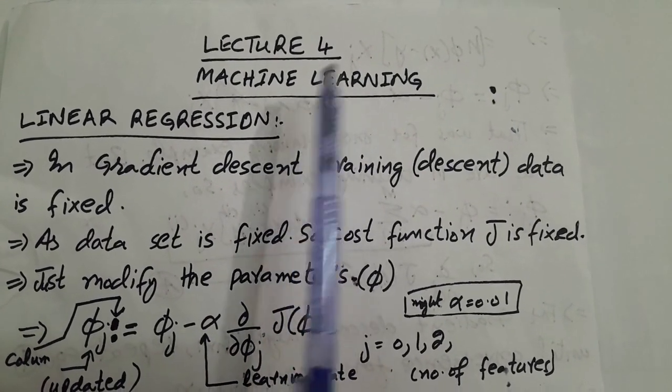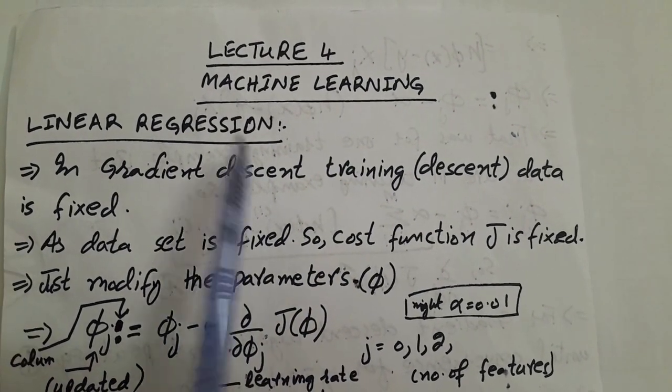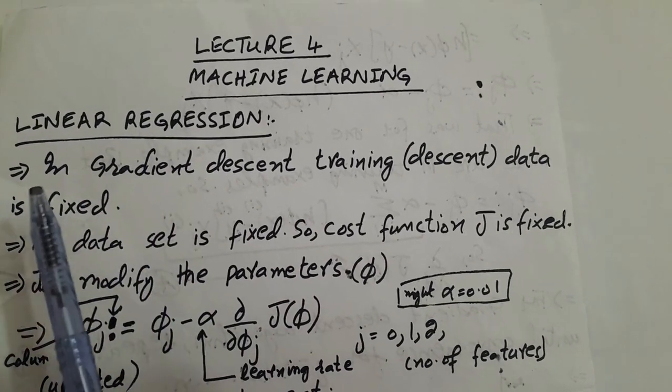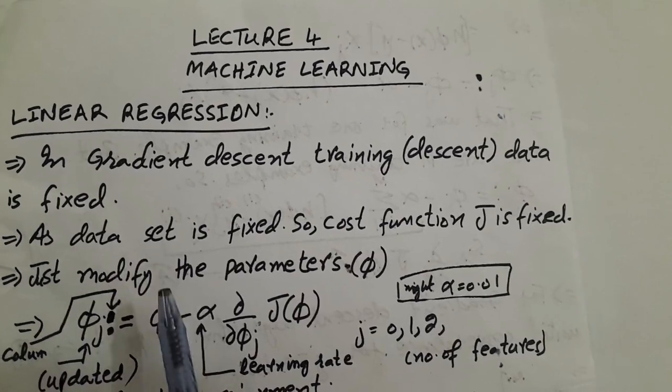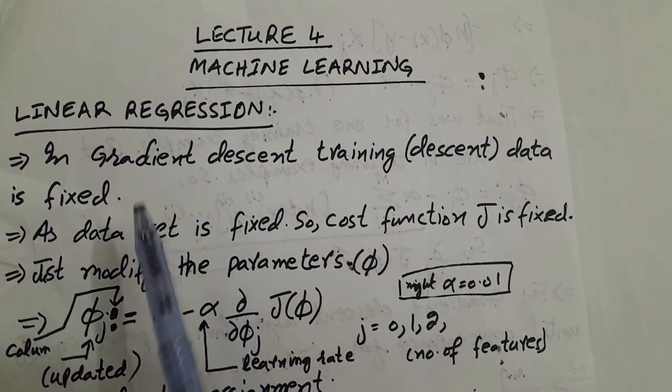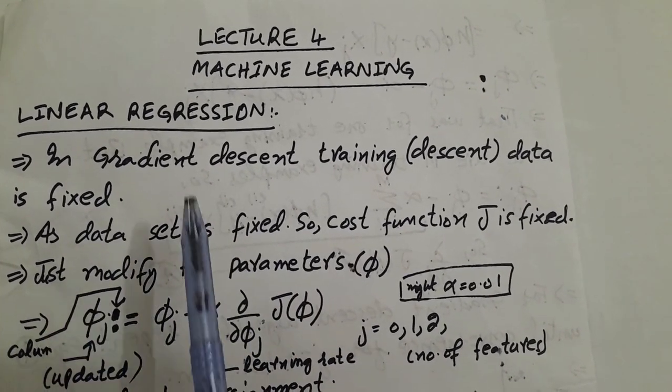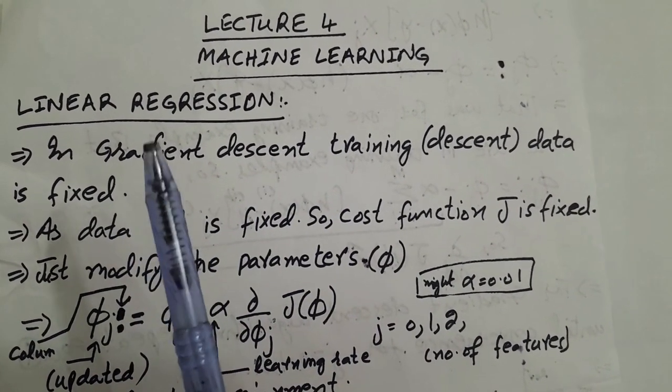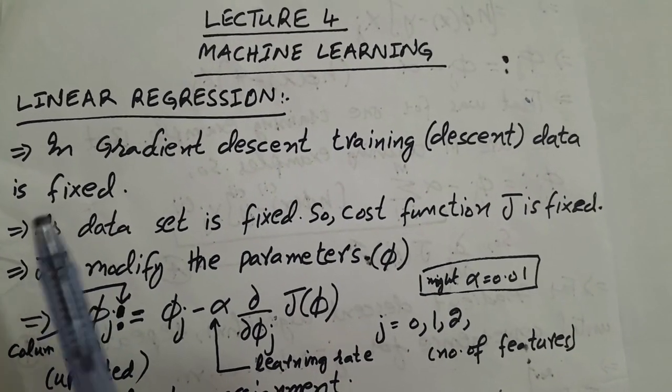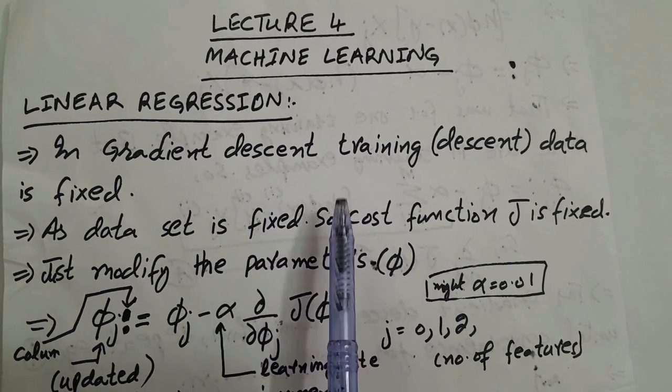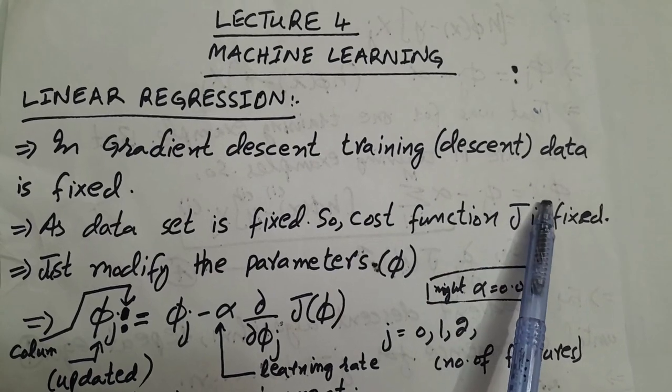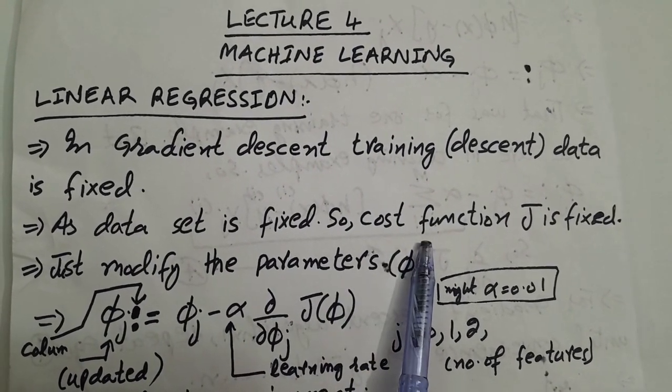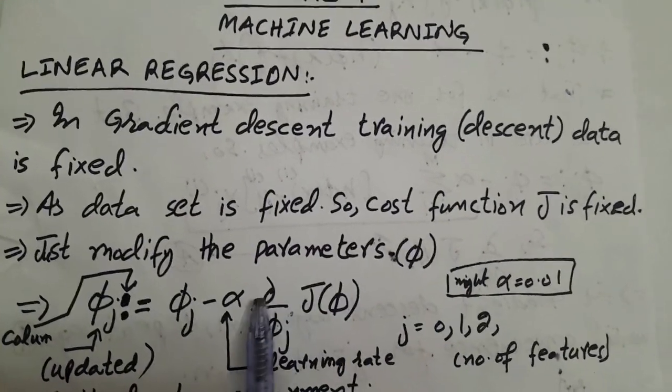Welcome to lecture number 4 of machine learning. Linear regression is continued from the previous lecture. Now I will briefly explain the mathematical expressions which we got from the previous lecture. In gradient descent, the training data set is fixed. First of all, keep this in mind. Second, as the data set is fixed, the cost function J is fixed. Third point is just modify the parameters phi.